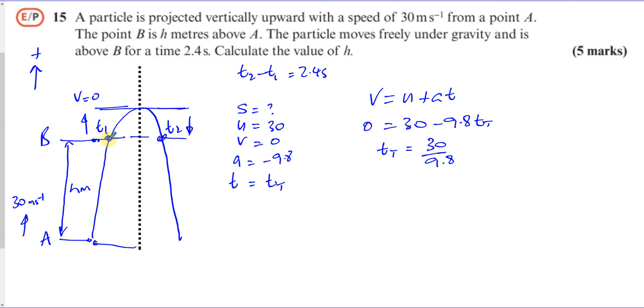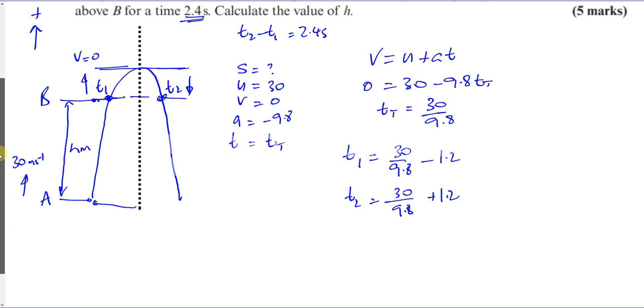So going on the way up, for it to go from B to the top of the flight will be the same time as on the way down from the top of the flight down to B. So that splits this time into two, two equal halves. So the time one is going to be 30 over 9.8 minus 1.2, and we could even find time two. Either of them will help us to answer this question. 30 over 9.8 plus 1.2, because that's half the time for it to go up, and then the other half of the time for it to go down.